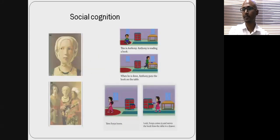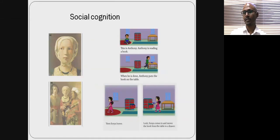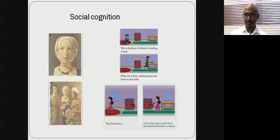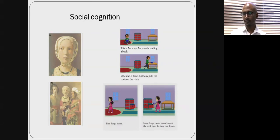One aspect not commonly tested but often impaired is social cognition. The most important component is theory of mind — the ability to predict what another person is thinking — for which there are bedside tests. Another test is the Mind's Eye test, where you show a picture of a person looking somewhere and try to infer their intentions. These are not commonly used in practice but are increasingly relevant.